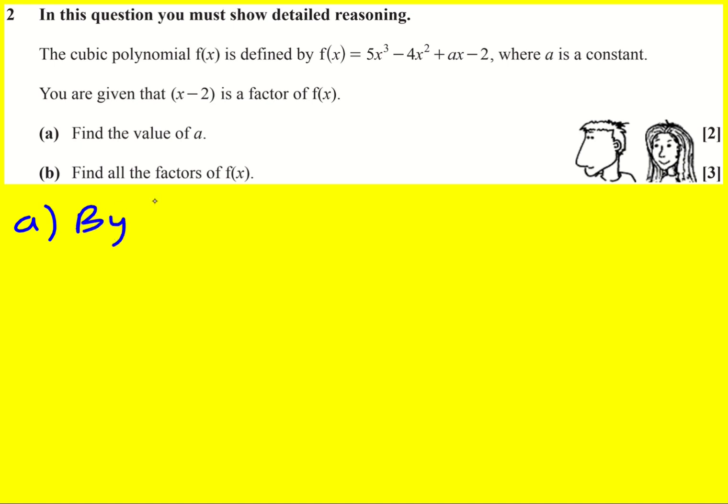Well, by the factor theorem - and maybe this bit is not essential to write down but I think it's good to write it down - by the factor theorem, x minus 2 a factor implies f of 2 is equal to 0, and vice versa in fact, so you can even do this if and only if implication.